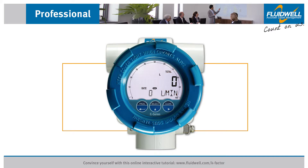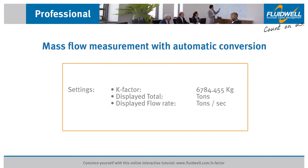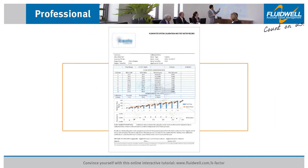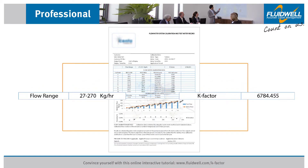The k-factor setting should be configured before installation to ensure correct measurements in any situation. In this tutorial we will set the k-factor for mass flow measurement with automatic conversion and configure the settings to display the mass total and flow rate. Before we set up the k-factor we need to identify this number as provided by the flow meter manufacturer. In this example, that is 6784.455 and the measurement unit is kilograms.